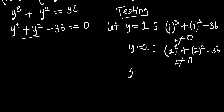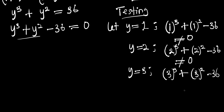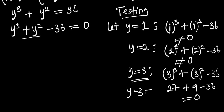When y equals 3, we have 3 to the power 3 plus 3 to the power 2 minus 36. That is 27 plus 9 minus 36, which equals 0. That means y equals 3 is a valid solution. So we can write the factor y minus 3 equals 0.